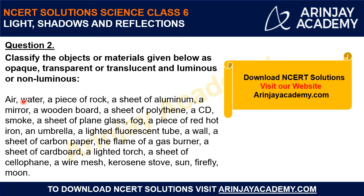Let's see all these objects: air, water, a piece of rock, a sheet of aluminium, a mirror, a wooden board, a sheet of polythene, a CD, smoke, a sheet of plain glass, fog, a piece of red hot iron, an umbrella, a lighted fluorescent tube, a wall, a sheet of carbon paper, the flame of a gas burner, a sheet of cardboard, a lighted torch, a sheet of cellophane, a wire mesh, kerosene stove, sun, firefly, and moon. This list is quite long, but classifying them will not be difficult because these are things we observe in everyday life.